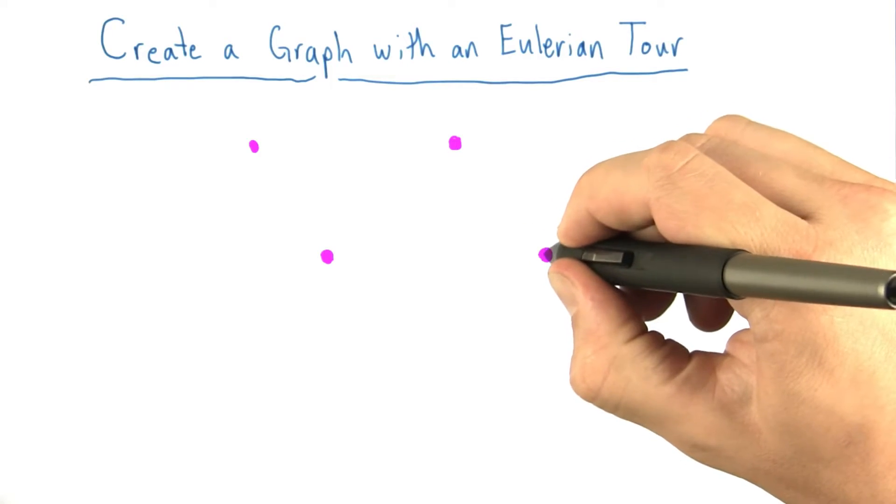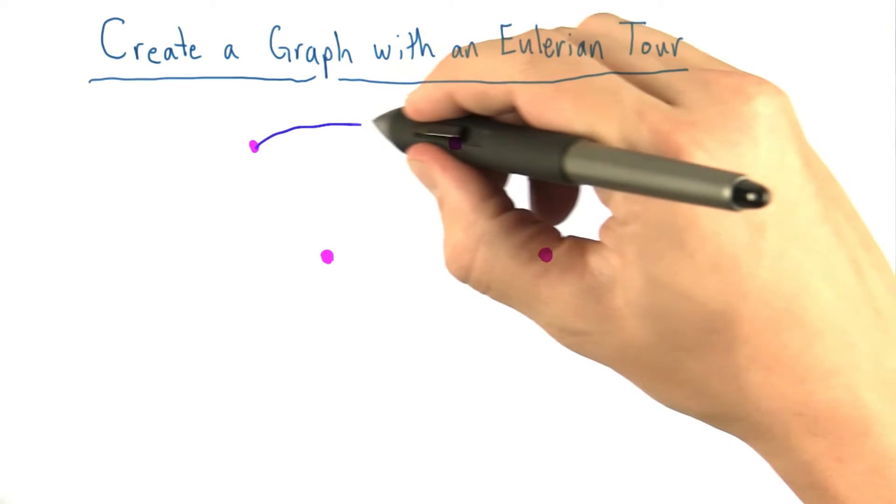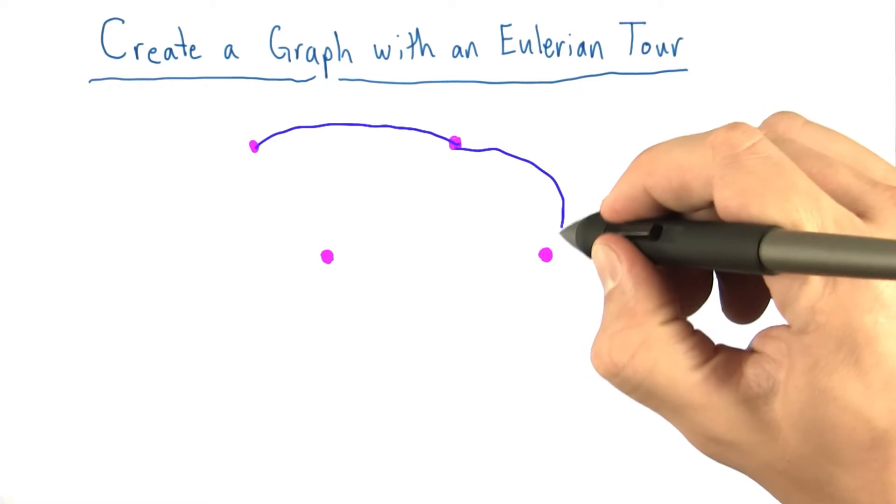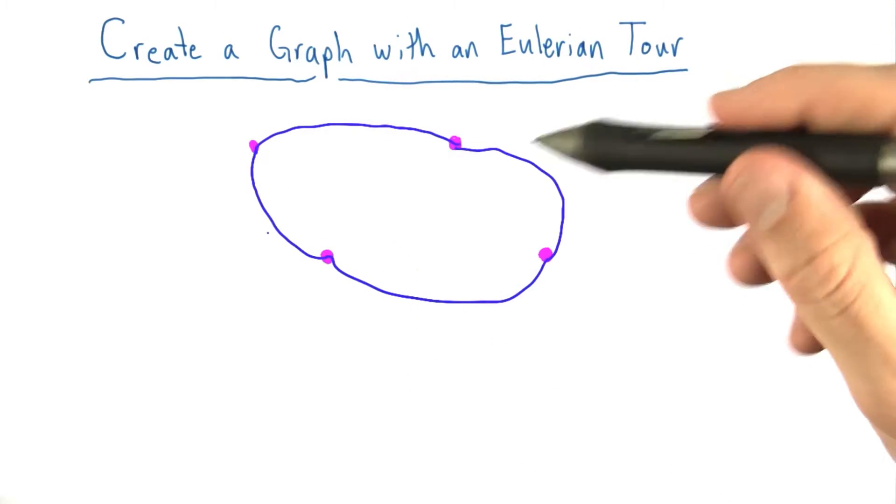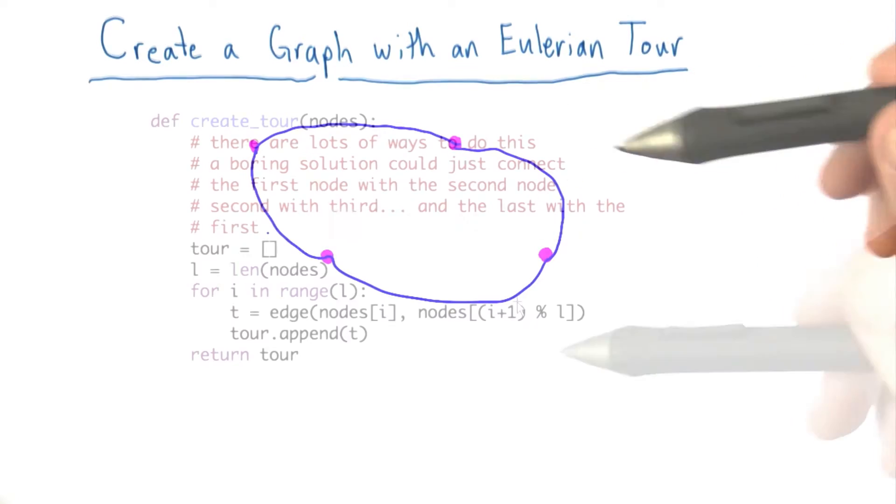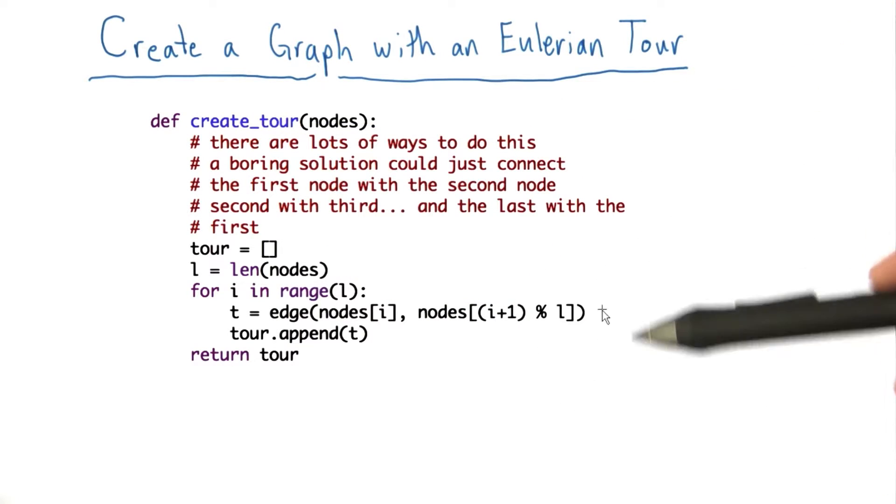One simple solution is to take our list of nodes, let's say we have four of them, and connect the first one with the second one, the second one with the third one, the third one with the fourth one, and the last one with the first one. Then we have trivially an Eulerian tour through this graph. Here is my code to do what I just described.